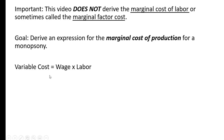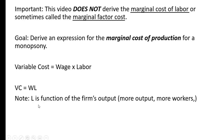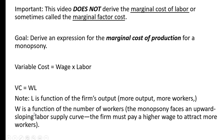We're going to start with variable cost equaling the wage times the variable input labor. L is going to be a function of the firm's output — more output means the firm needs more workers to produce that output. And W is going to be a function of the number of workers L, because the monopsony faces an upward sloping labor supply curve, so the firm must pay a higher wage to attract more workers.